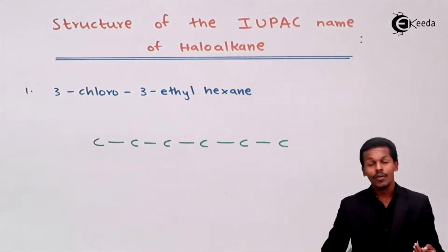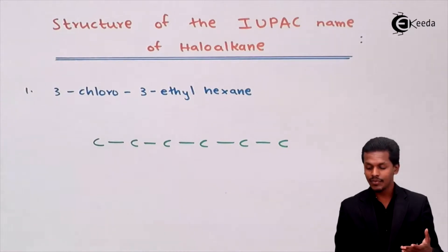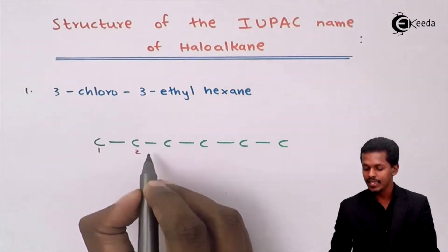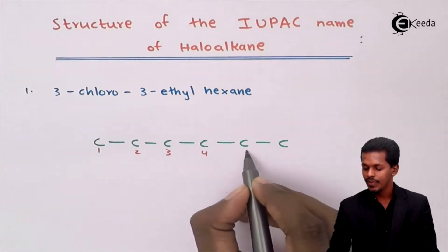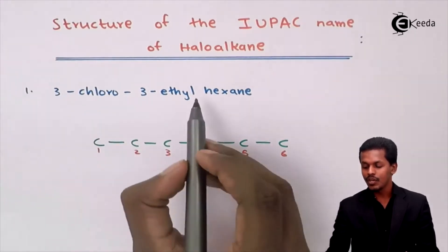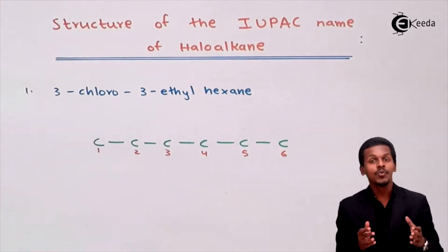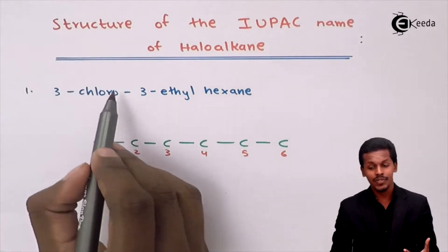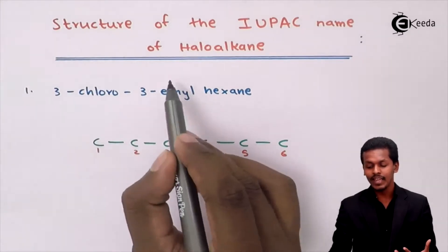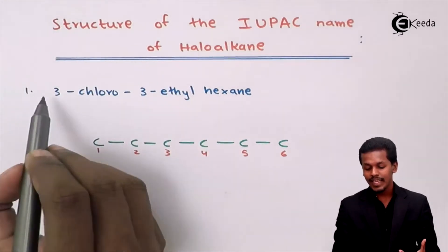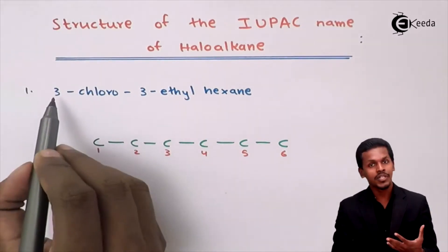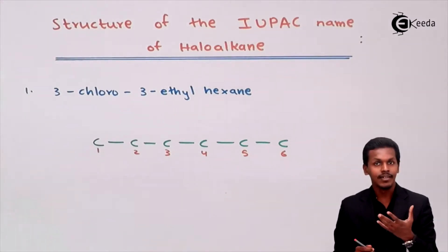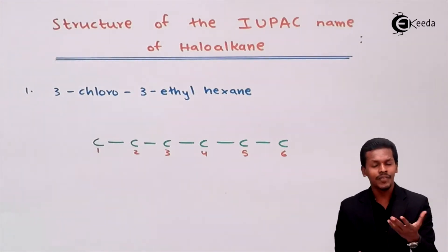Now we number the carbon atoms: first, second, third, fourth, fifth, and sixth. Now let us move on to the substituents. In this case the substituents are chloro and ethyl, each with a particular number indicating the position of the group or atom.